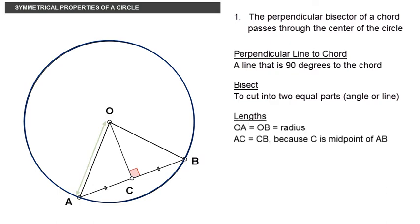In terms of lengths, the radii OA and OB are definitely equal and with C being the midpoint of AB, AC equals CB.